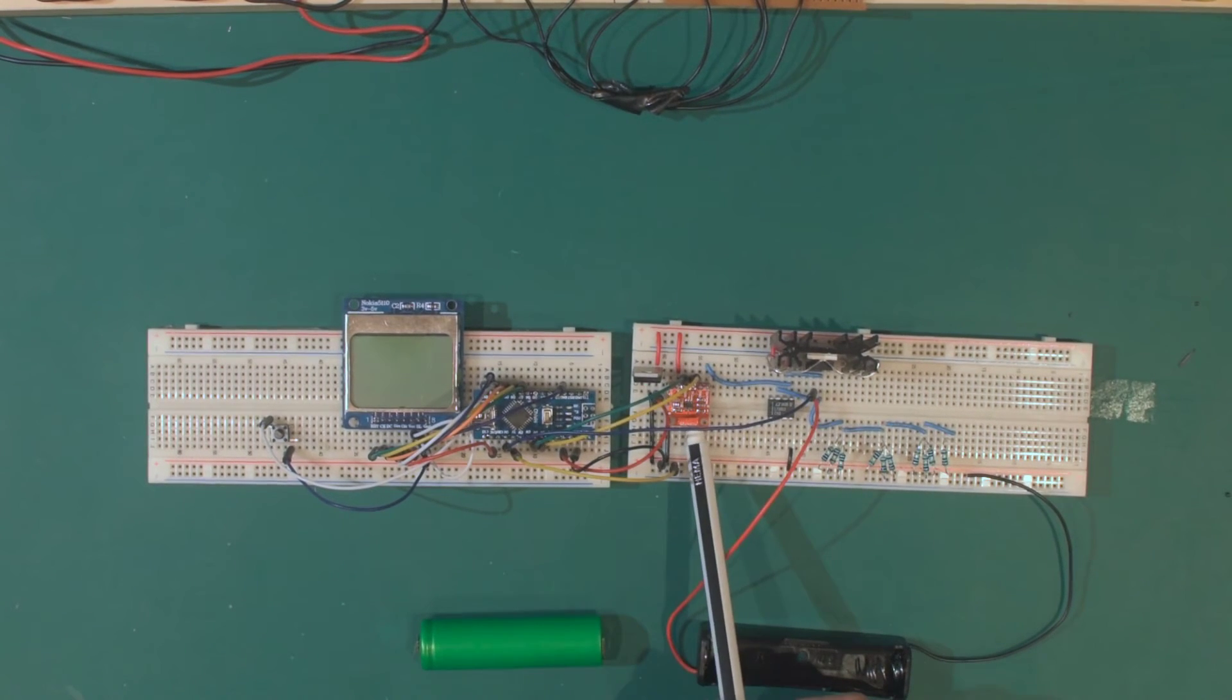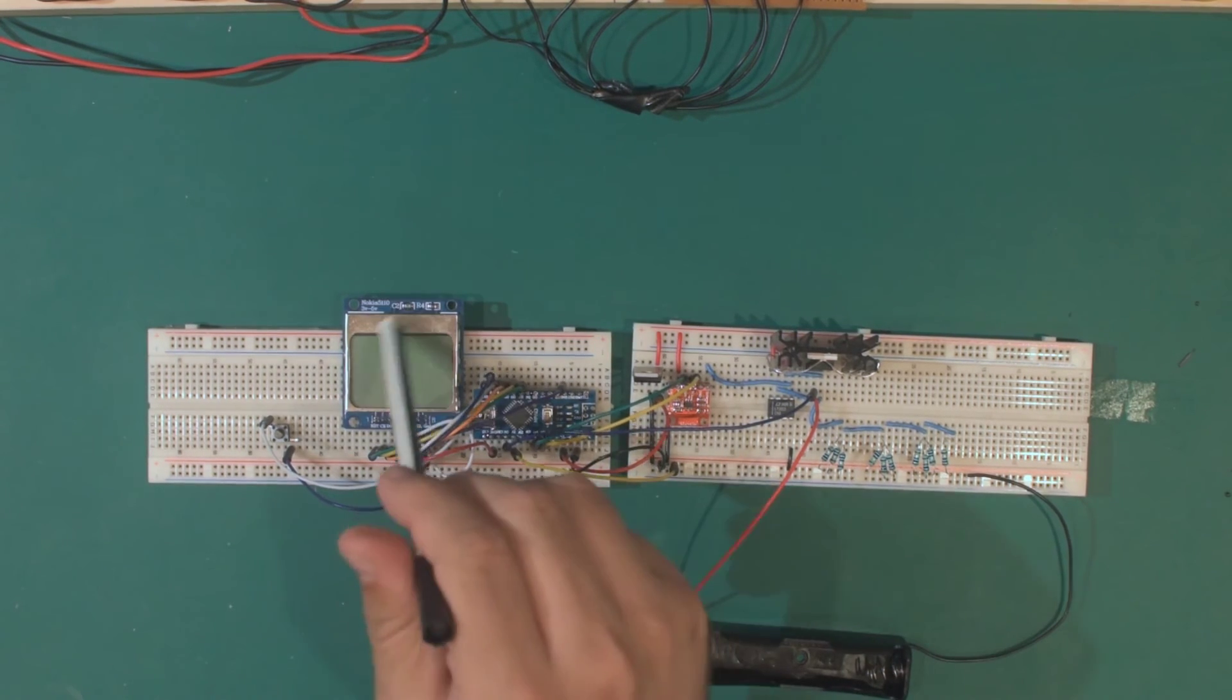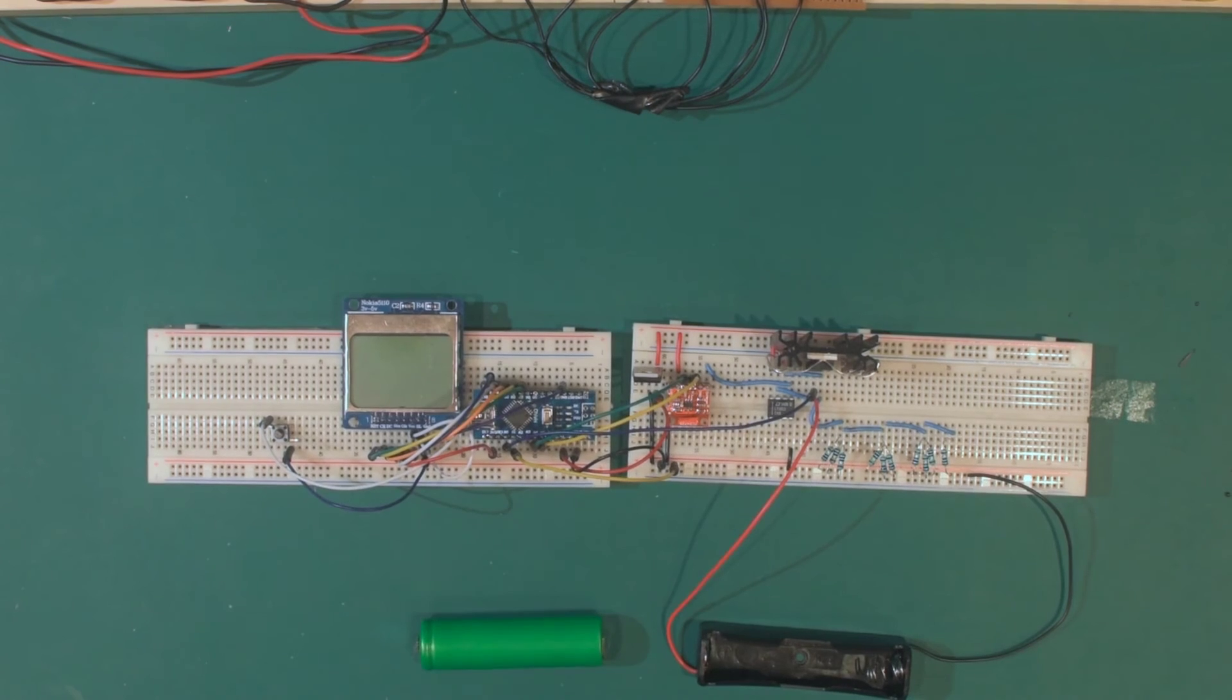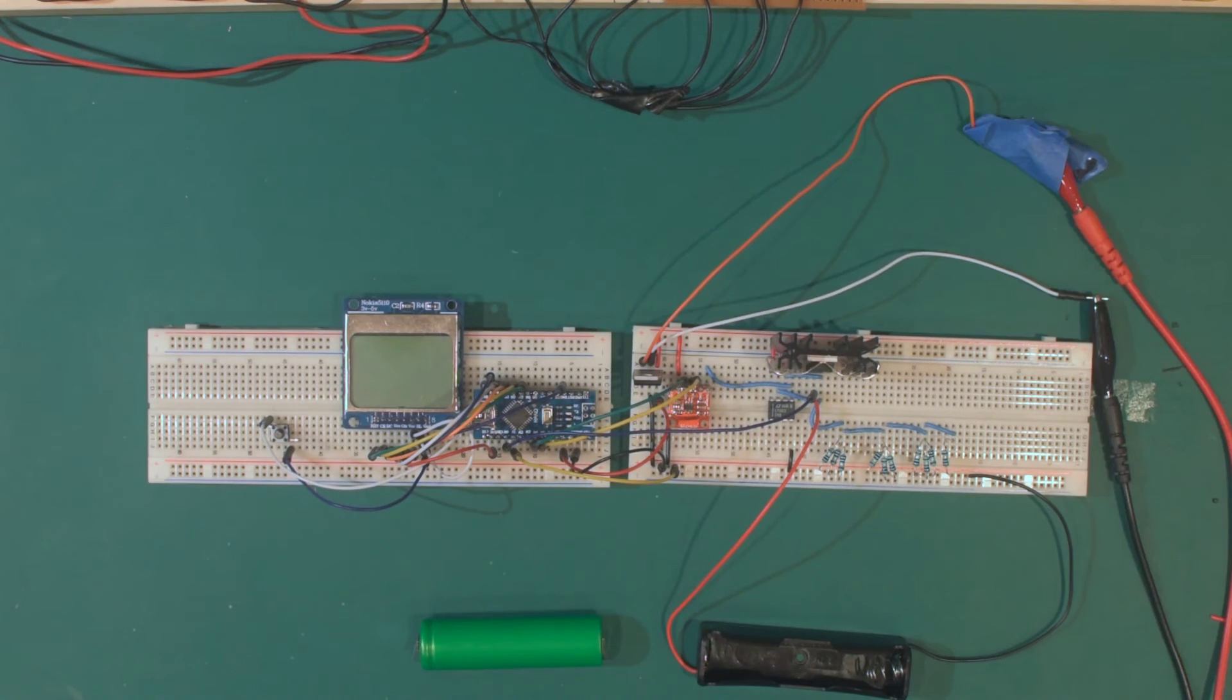The MCP4725 is now connected into the Arduino and the Arduino has even got the 5110 Nokia screen connected to it as it was on the charge station. So we should be able to power this up with 12 volts from the bench power supply and there we go, booted. Great.